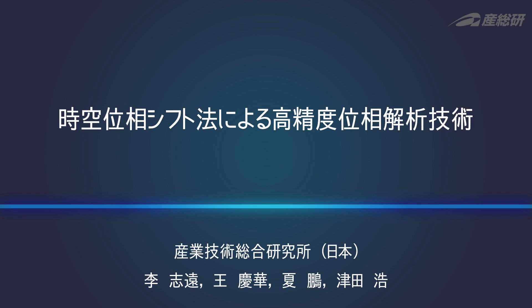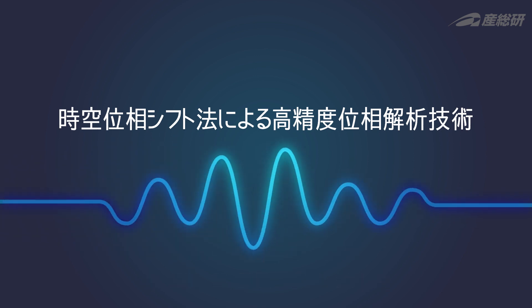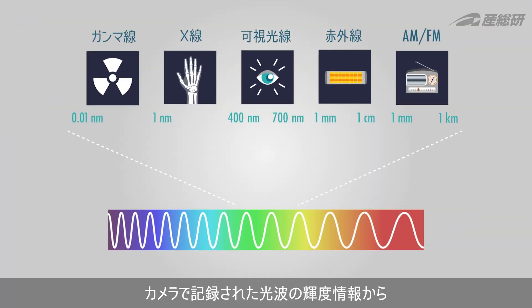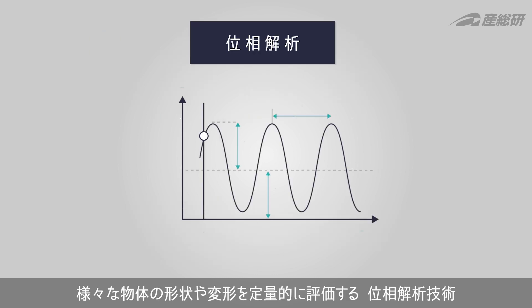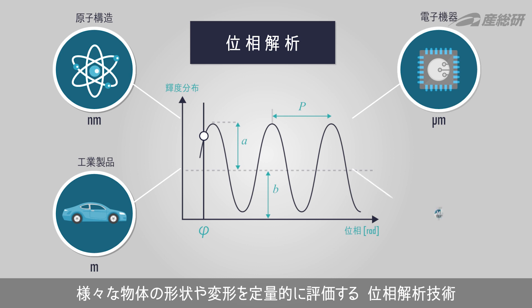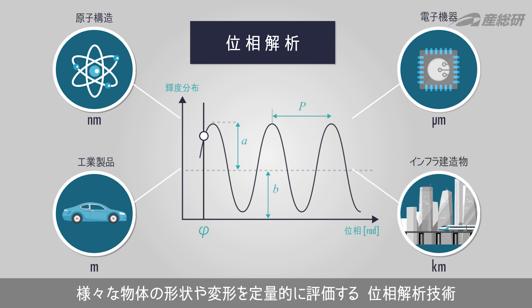Spacio-Temporal Phase Shifting Method for Accurate Optical Metrology. Phase analysis technology can quantitatively measure the shape and deformation of various objects from the intensity information of the light waves recorded by the camera.